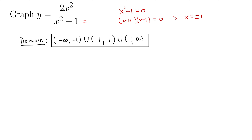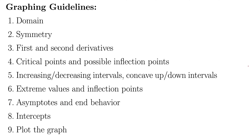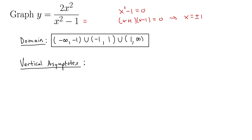While we're here, we might as well do our vertical asymptotes. Technically asymptotes aren't until step 7, but they'll make a difference in step 5 when we go to determine our increasing and decreasing and concave up and concave down intervals. Since there's no way to cancel anything in the denominator with the numerator, that tells us that x equals plus or minus 1 are actually vertical asymptotes.